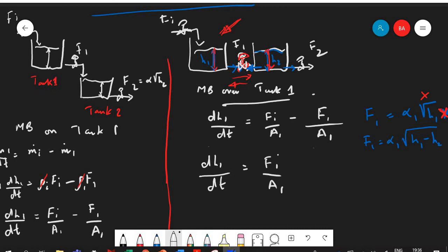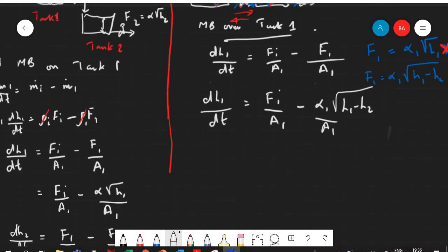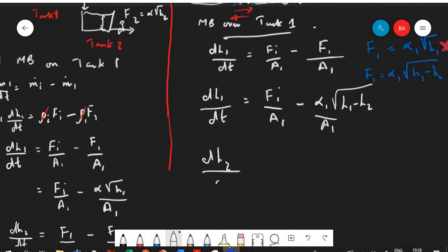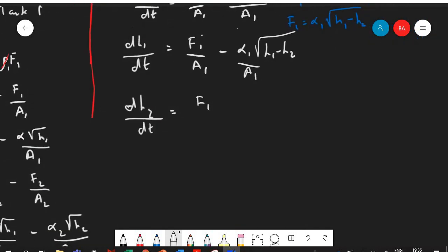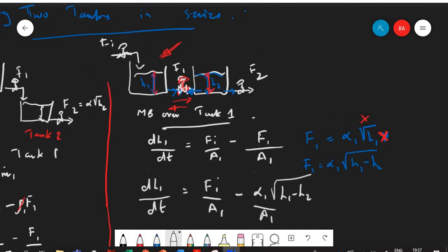So the equation that you're going to get here is slightly different. It will look very similar however if you want to substitute you'll find out that the F1 is different. And actually if you substitute for dh2 by dt you're going to get something that is very similar because now what we have is F1 over A2 minus F2 over A2. F1 again is the term which is going to be different: α1 into square root of h1 minus h2 over A2. However F2 is just α into square root of h2 over A2.